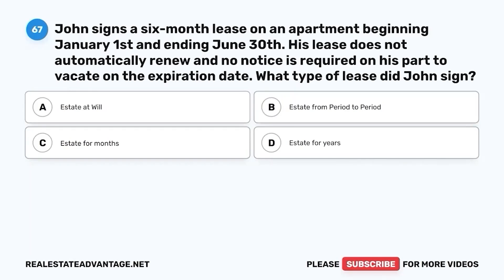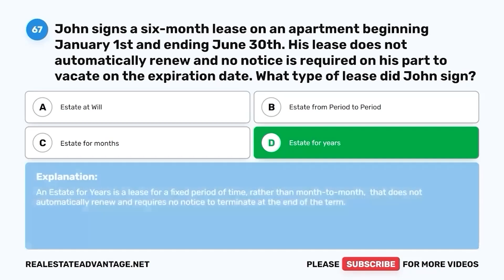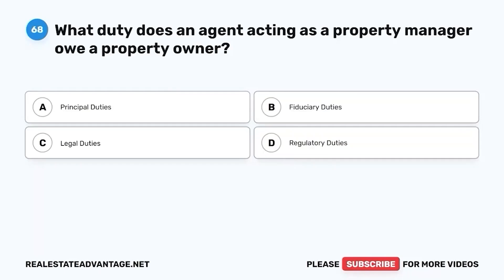Question 67. John signs a six-month lease on an apartment beginning January 1st and ending June 30th. His lease does not automatically renew and no notice is required on his part to vacate on the expiration date. What type of lease did John sign? A. Estate at will. B. Estate from period to period. C. Estate for months. D. Estate for years. The correct answer is D. Estate for years. An estate for years is a lease for a fixed period of time that does not automatically renew and requires no notice to terminate at the end of the term.